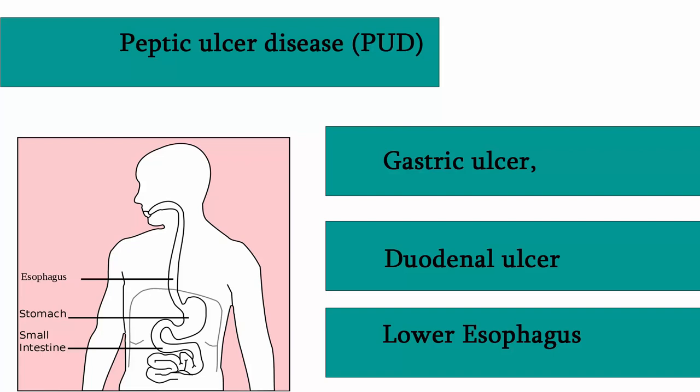Peptic ulcer disease is a break in the inner lining of the stomach, the first part of the small intestine, or sometimes the lower esophagus. An ulcer in the stomach is called a gastric ulcer, while one in the first part of the small intestine is a duodenal ulcer.